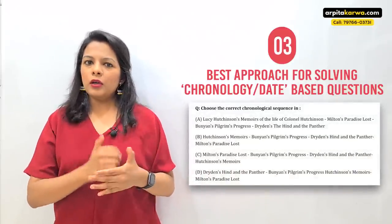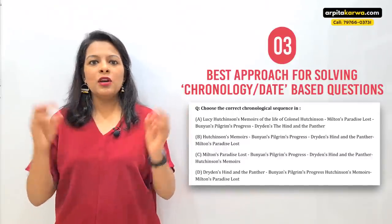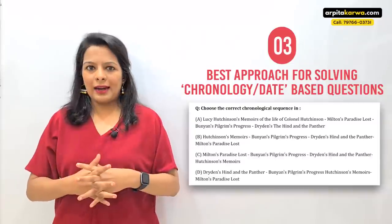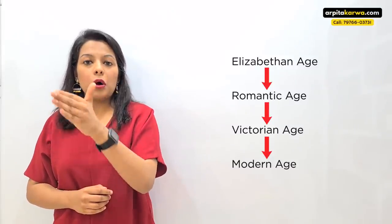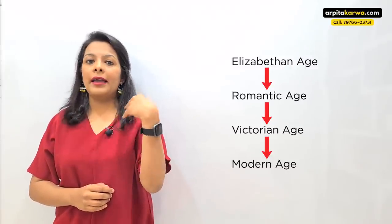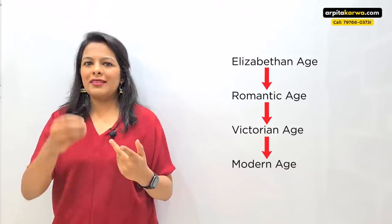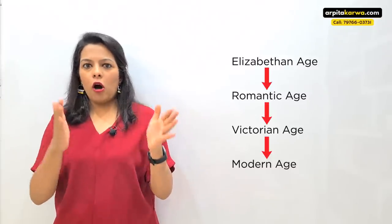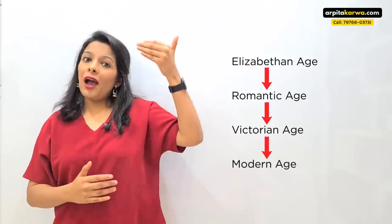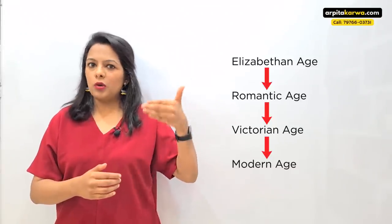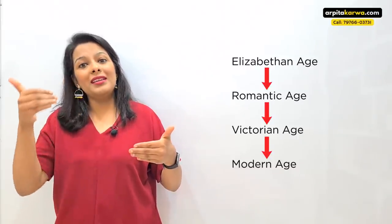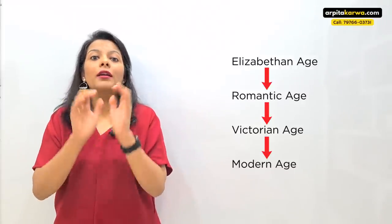So you'll remember that Oliver Twist was written before Hard Times. In the exam paper, there are generally two types of chronology questions. The first type is when they take four writers from four different eras and give you four books — for example, a play by Shakespeare, a novel by Charles Dickens, a novel by Virginia Woolf, and a novel by a Romantic writer like Jane Austen. If you've gone through the course in order, you'll know the timeline: Elizabethan first, then Romantic, then Victorian, then Modern — even without remembering the exact publication date.